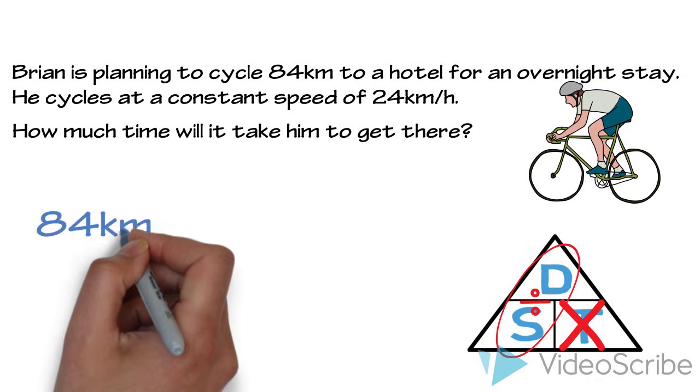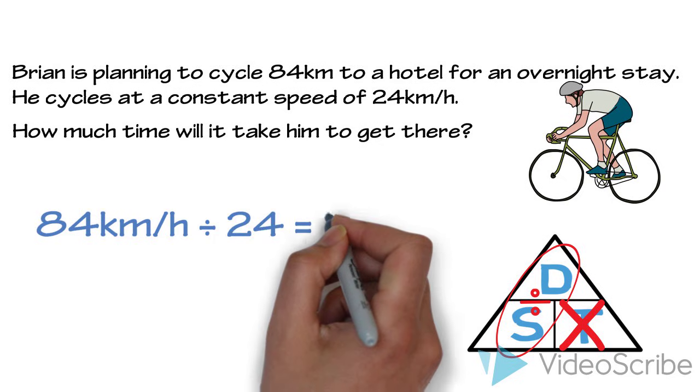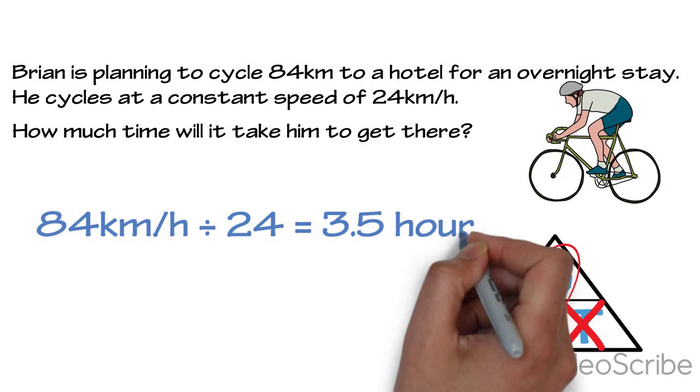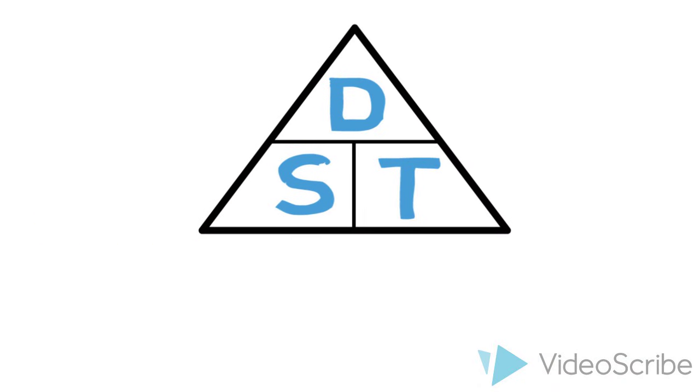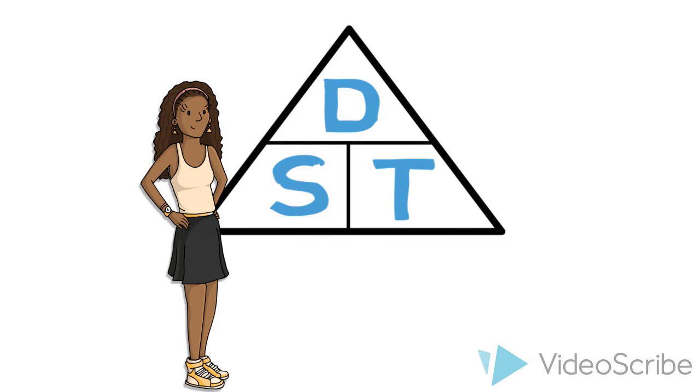That's 84 kilometres an hour divided by 24. That gives us three and a half hours. So, that's how the DST triangle works. Now take some time to try answering some questions on your own.